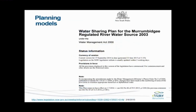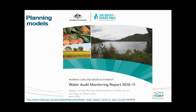The next water sharing plan for the Murrumbidgee will be prepared using Source. The existing water sharing plan is a legislative instrument prepared under the Water Management Act 2000, so it has the power of law behind it. In terms of monitoring and evaluation, federal and state governments have processes for reviewing performance. This is the front page of a federal government monitoring report prepared by the Murray-Darling Basin Authority — the Water Audit Monitoring Report — which covers basins within the Murray-Darling Basin and examines compliance with the cap on diversions annually.